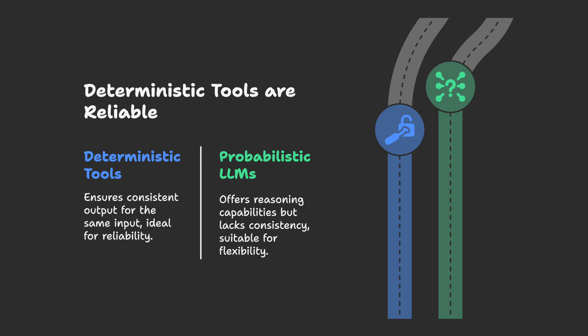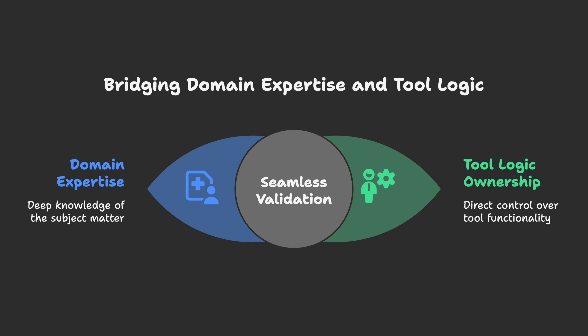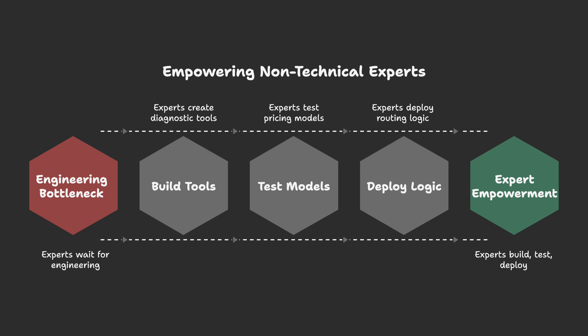Now let's talk about why this matters beyond convenience. First, deterministic tools are the foundation of reliable AI. LLMs are probabilistic — they're amazing at reasoning, but not so good at consistency. When you need the same input to produce the same output every time, you need deterministic logic, and Leapter makes that easy to build and verify. Second, this separates planning from execution. The person who knows the domain — the medical professional, the pricing analyst, the compliance officer — can now own the tool logic. They don't need to explain it to a developer who then translates it into code. They validate it directly, and that eliminates the translation layer where things get lost or misunderstood.